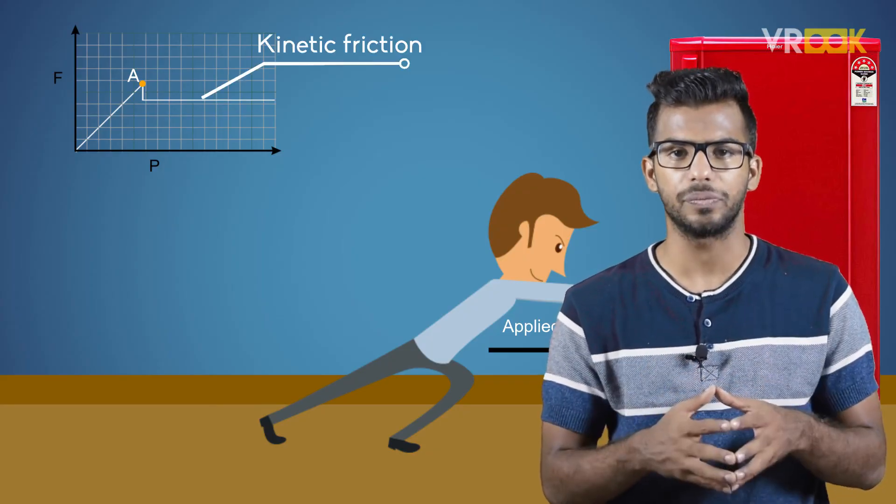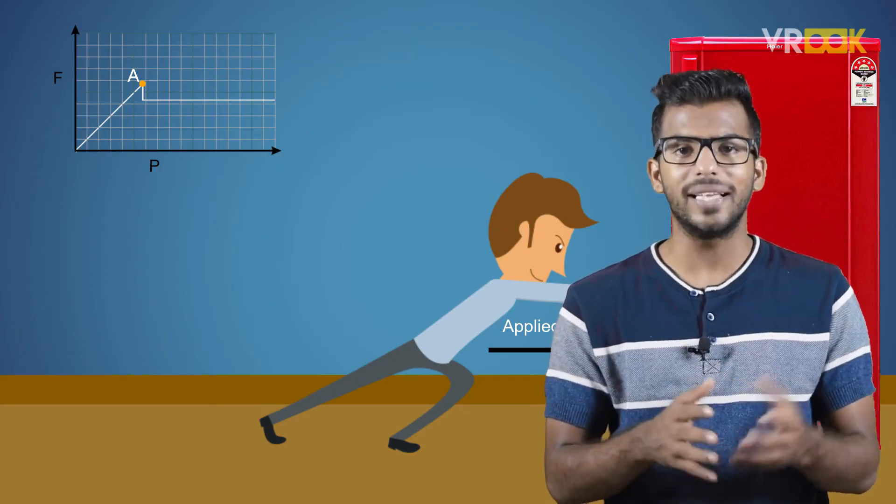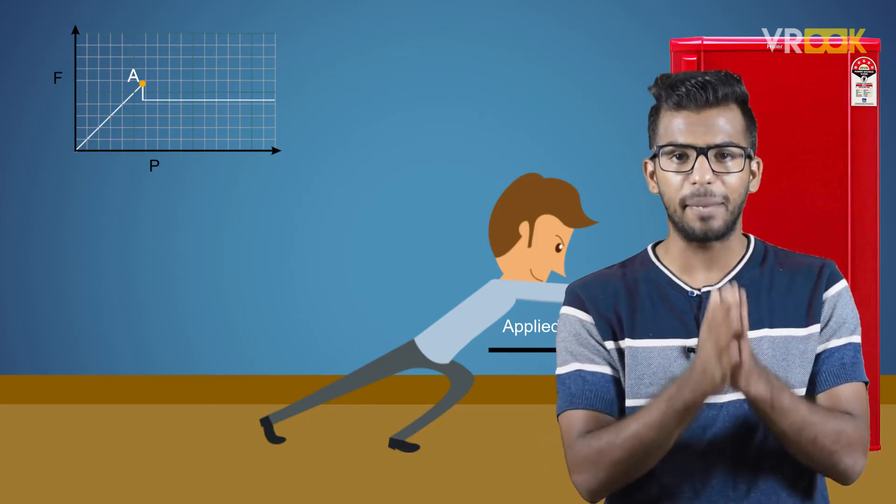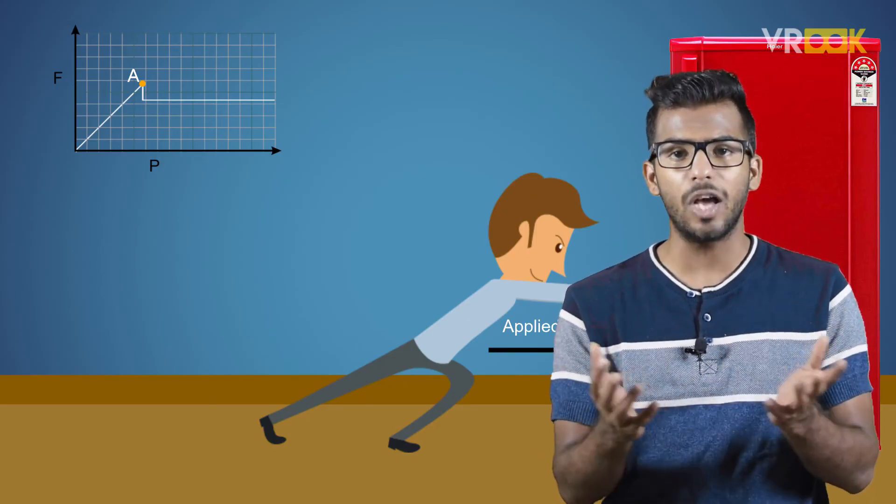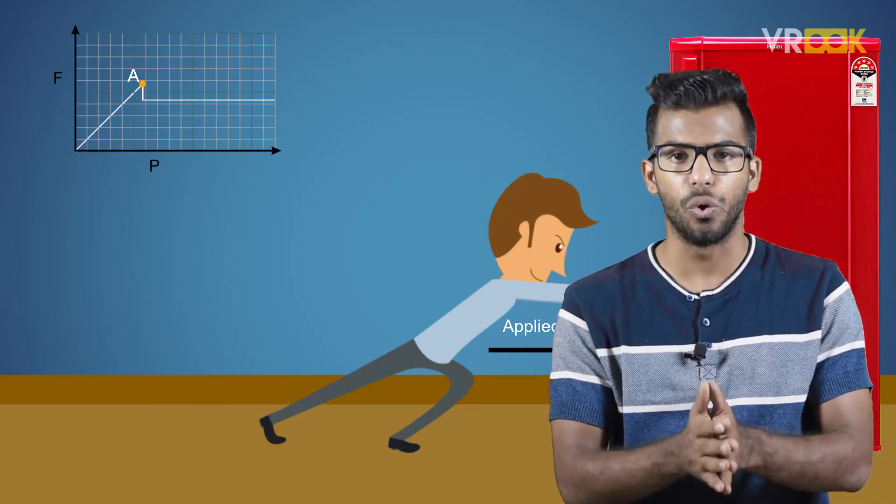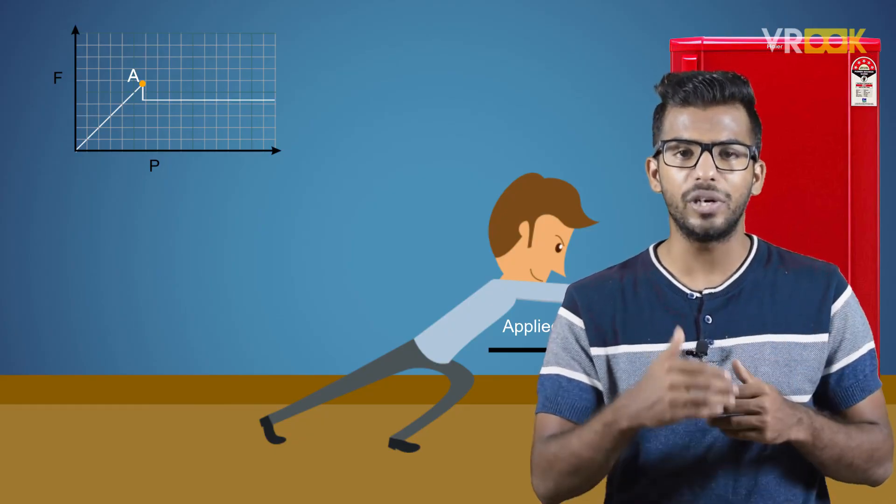The sudden drop in limiting frictional force can be observed when you try to push or pull a chair or any object on the floor. There will be a jerk before it starts to move. So this is all about limiting static friction.